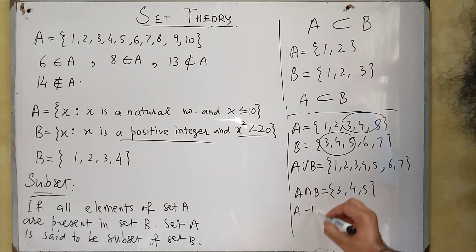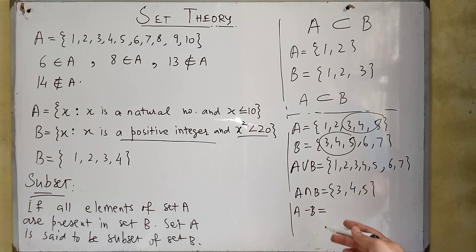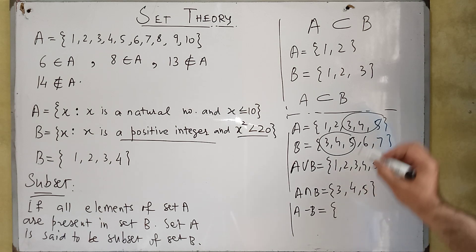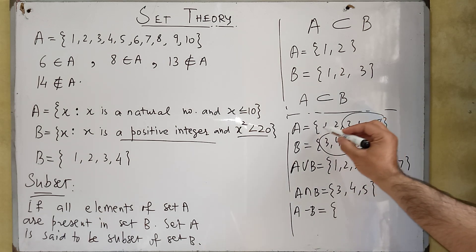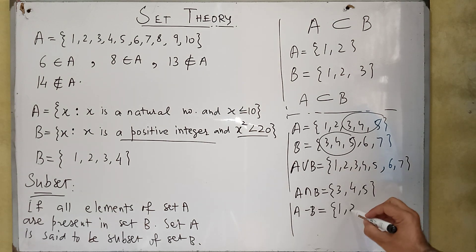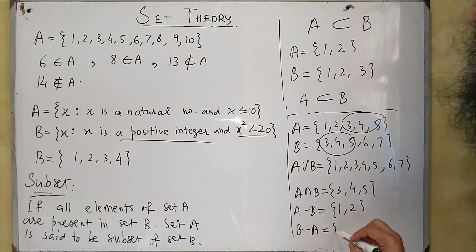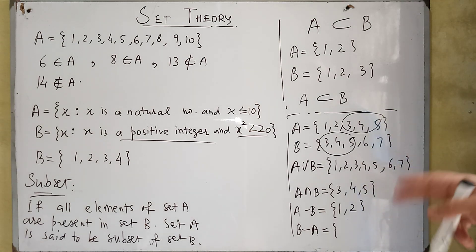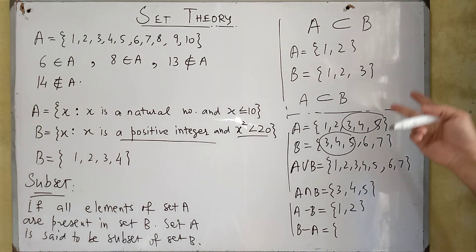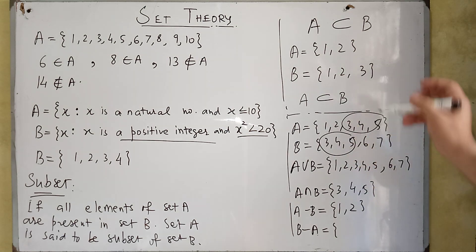The next concept is difference of two sets. A minus B means all elements of A which are not present in B. We can see that 1 and 2 are the elements not present in set B, so A − B = {1, 2}. Similarly, B minus A means all elements of B which are not present in A. Only 6 and 7 are not present in A, so B − A = {6, 7}.